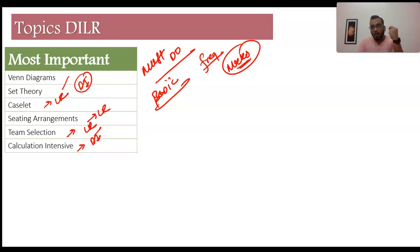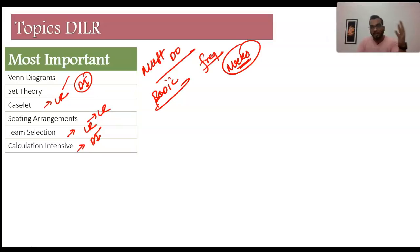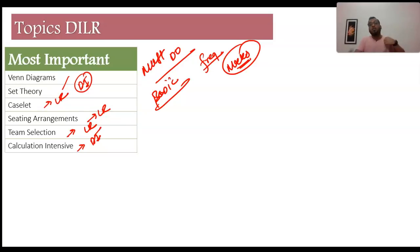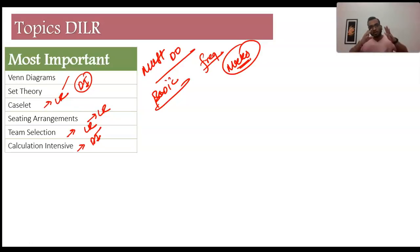You will get at least one set based on calculation, at least one set based on set theory or Venn diagram, at least one caselet, and at least one seating arrangement or puzzle type set. This is your broad range — if you cover this much, you'll see one set from each of these areas in your actual exam.